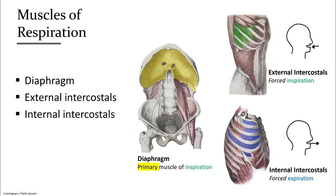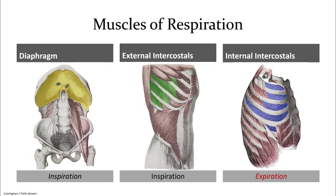For more forceful expiration, the abdominal muscles come into play to further push the diaphragm upward, even when you bend forward. The main muscles of normal breathing and their role in respiration are summarized here.